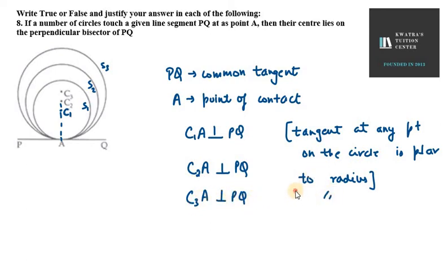So you can write the same reason. So now you can see that C1, C2, C3, and if I say that there are N numbers of circles, they all lie on the perpendicular line to PQ.